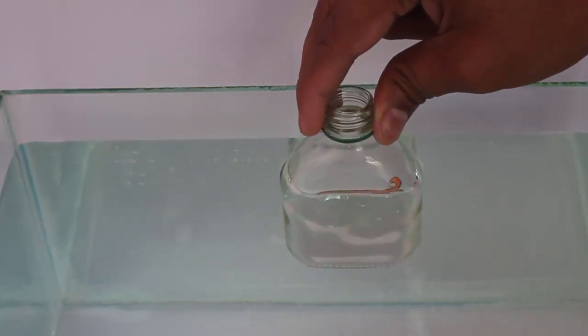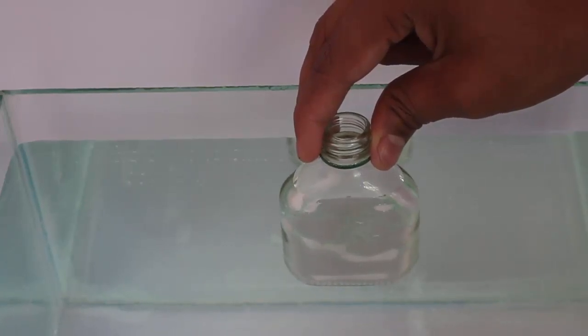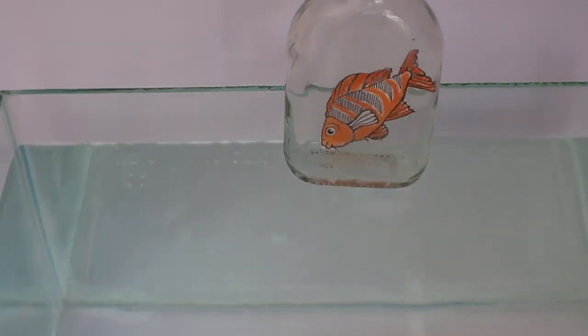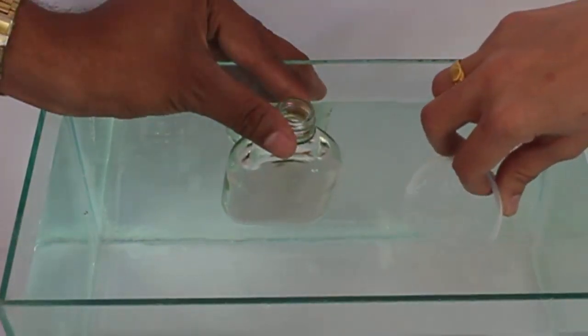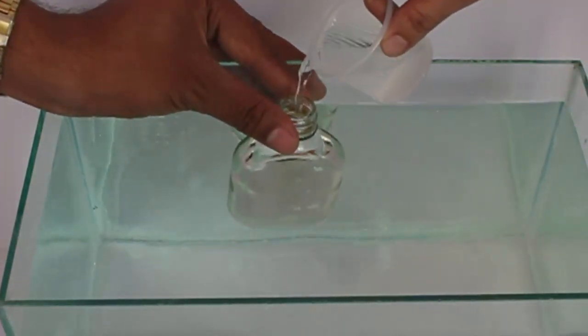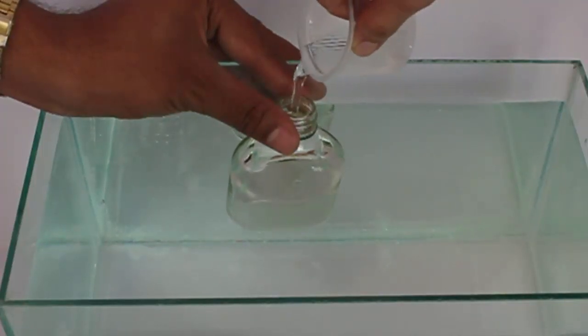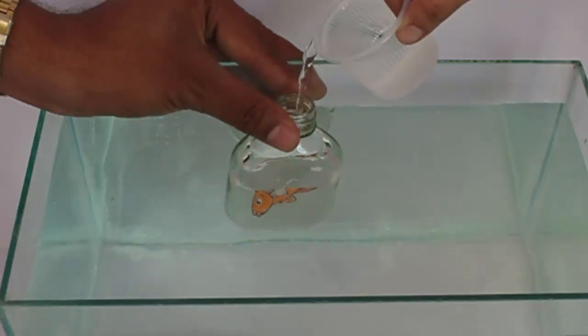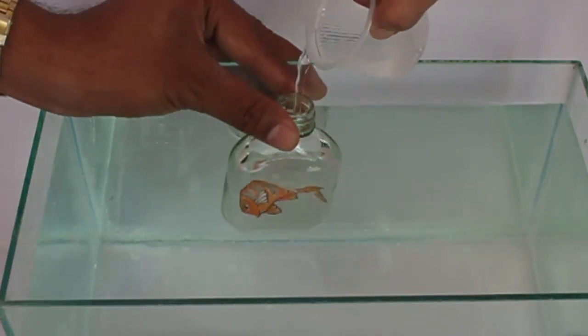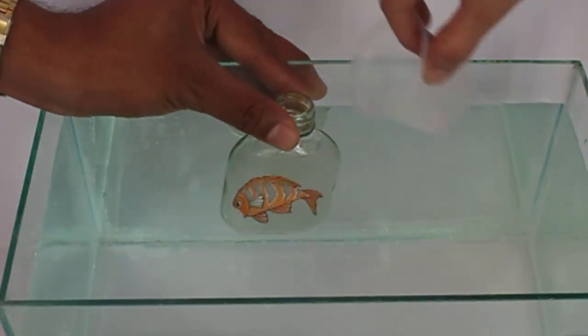The fish disappears because there is air in the bottle and water outside. The light bends because of refraction and the fish disappears. On lifting the bottle, there is air both inside and outside the bottle and the fish reappears.